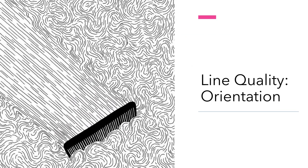There are four types of line quality that we'll talk about. The first one is orientation — the position of lines in a composition. Horizontal lines imply stability. When you look at a landscape drawn, you can tell that the horizontal line is the ground. It grounds you. It implies stability.